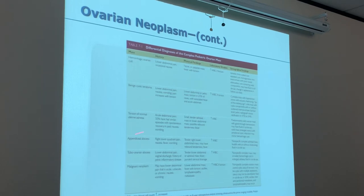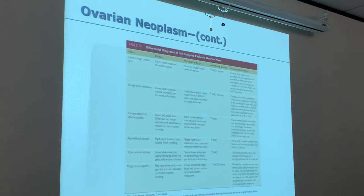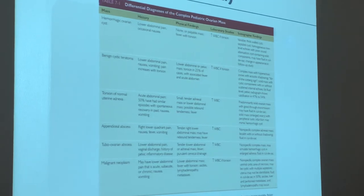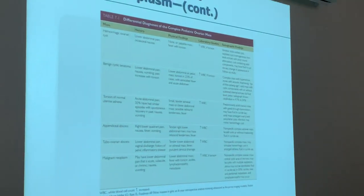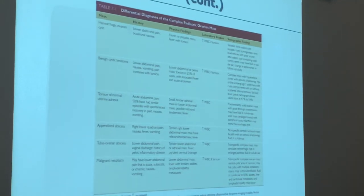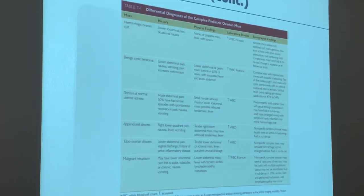Be sure you know this chart for your test. Almost all of these tumors show an increase in white blood cells because the body is trying to fight them off. If a mass is malignant, it could appear cystic with multiple septations. Wide septations indicate definite malignancy, while thin septations have a higher incidence of being benign.